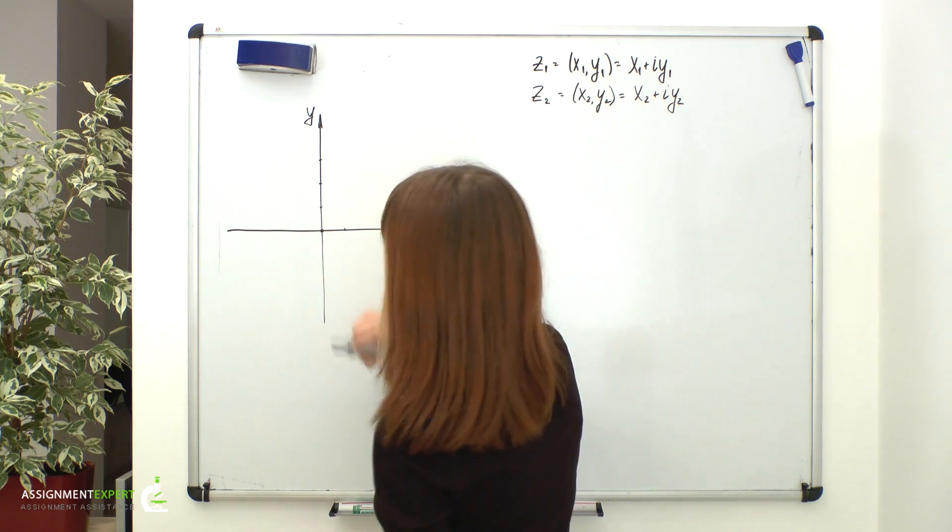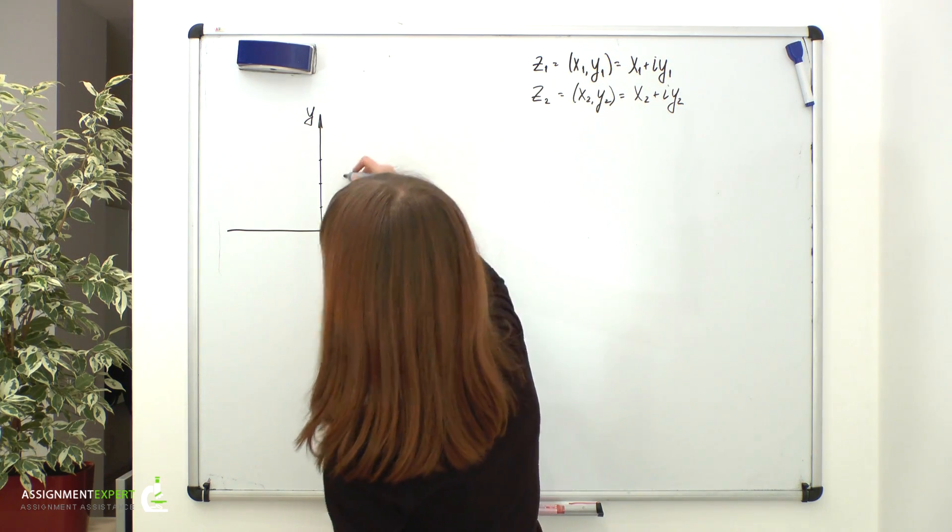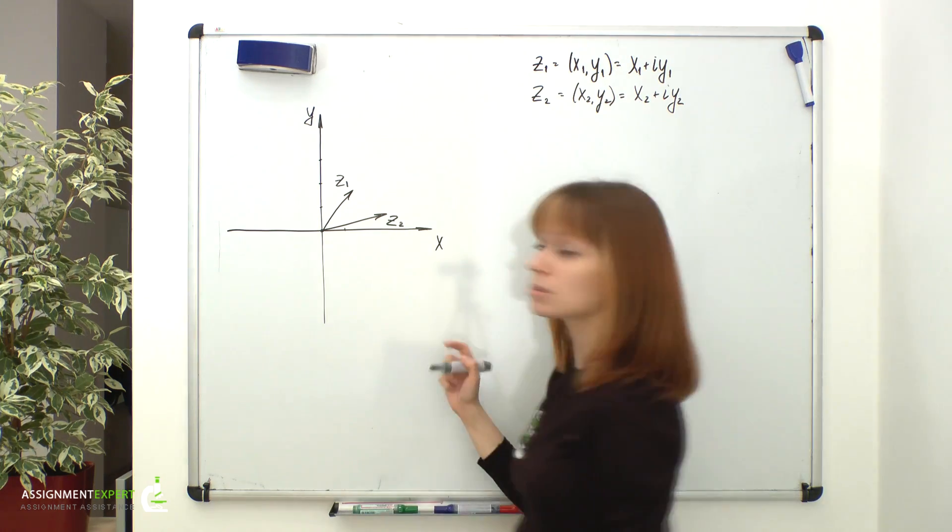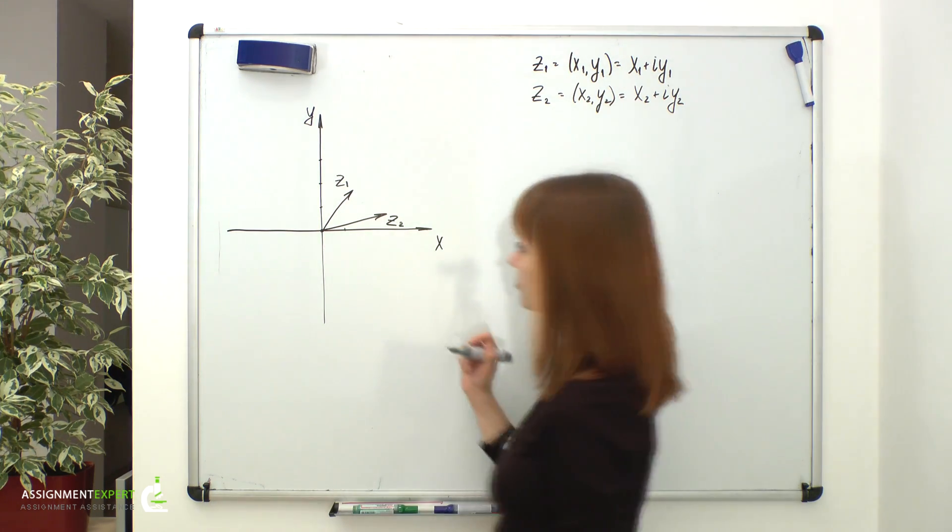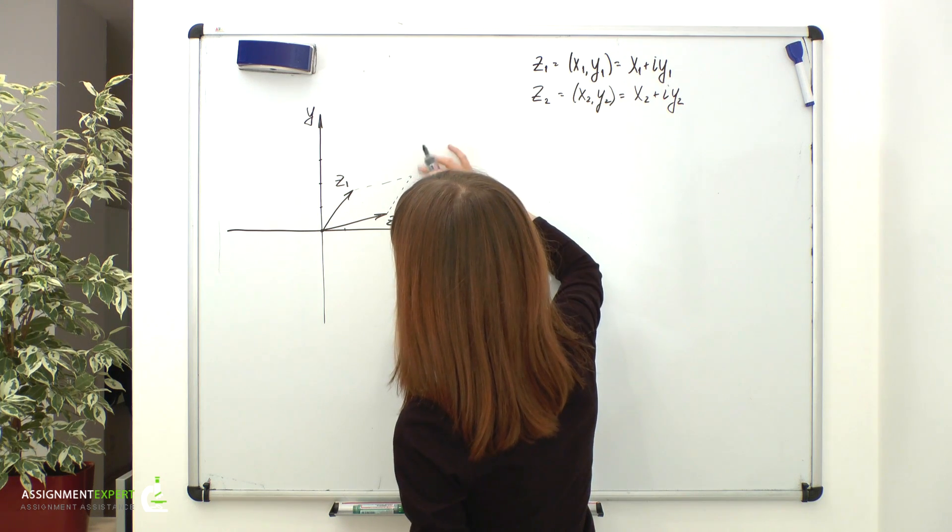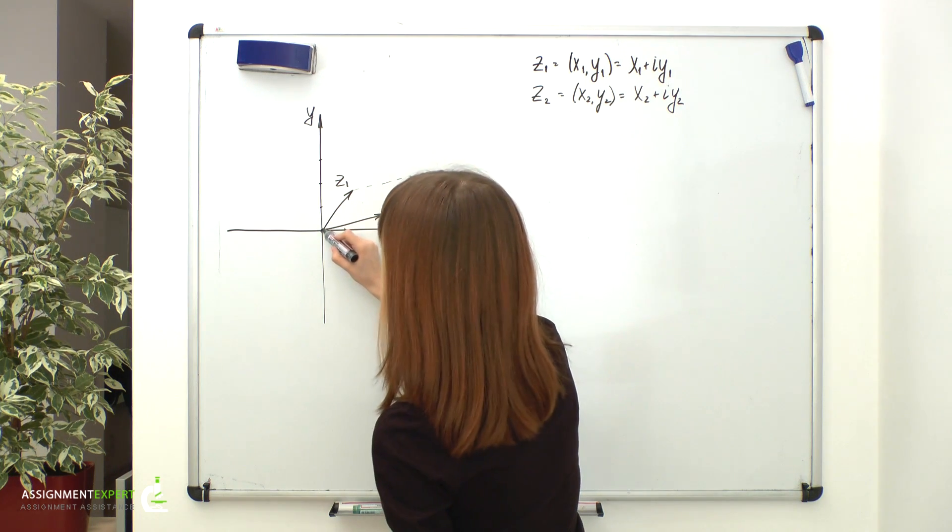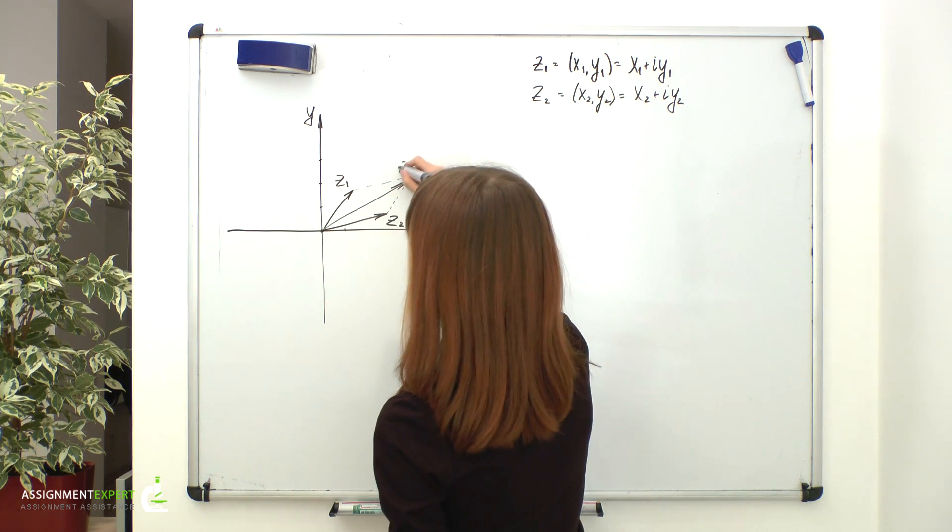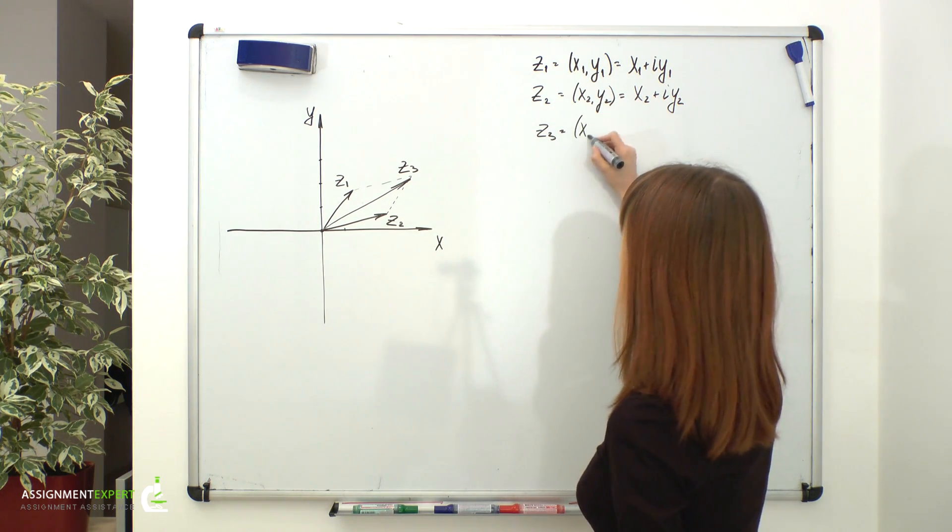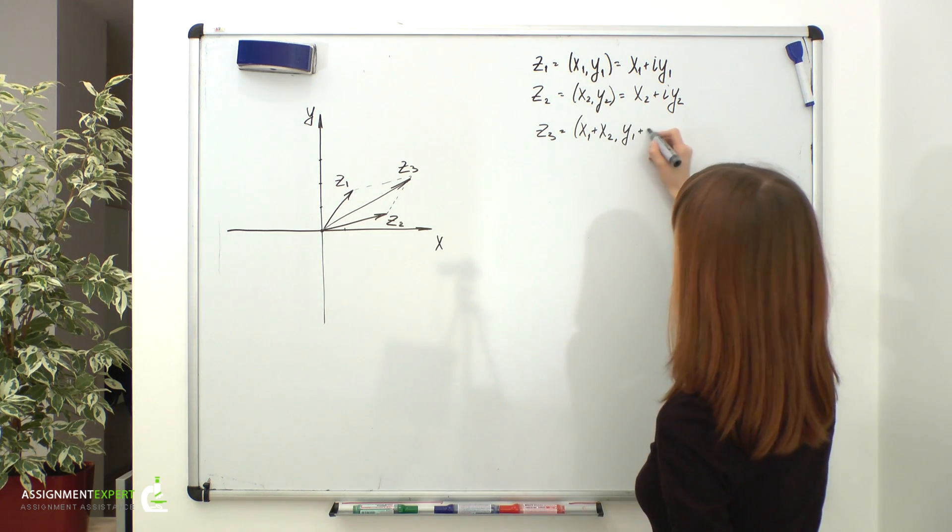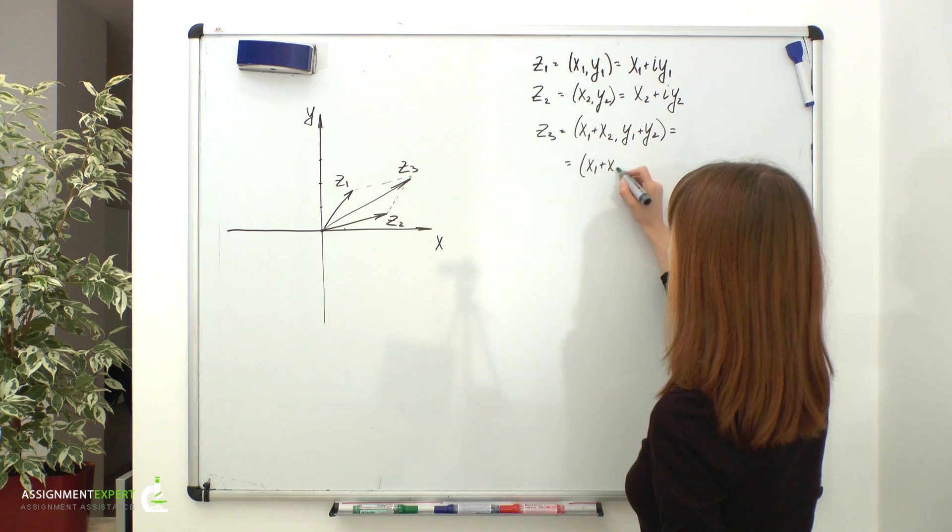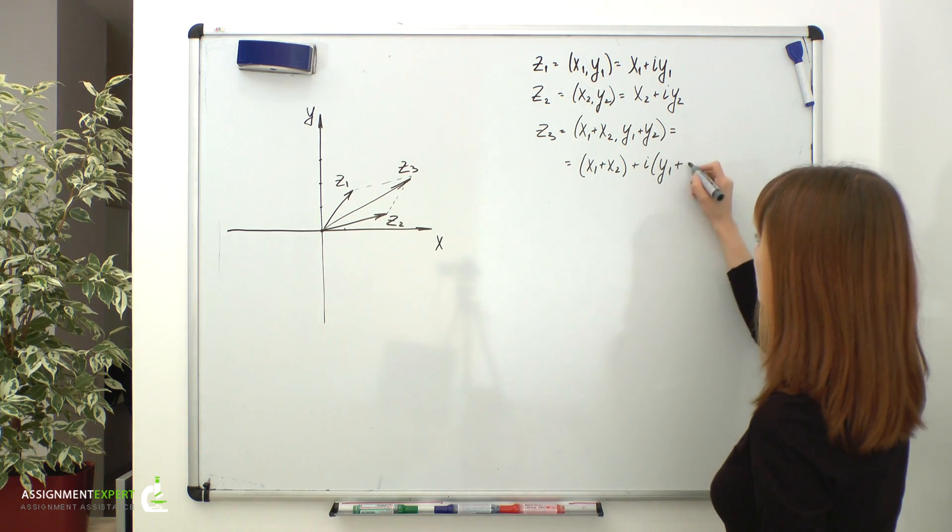Let's draw these radius vectors on our plane. Suppose here we have z1, here we have z2, and now using the parallelogram rule we can add these two vectors. So we form a parallelogram, and its diagonal will be the sum of these two vectors. Let's name it z3. So z3 will have coordinates x1 plus x2 and y1 plus y2, or in algebraic form x1 plus x2 plus i times y1 plus y2.